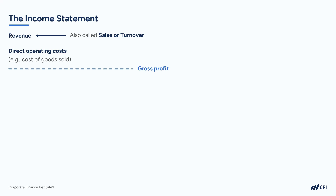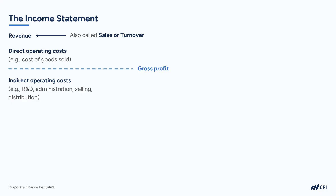Next on the income statement come the indirect operating costs. So this could be things like selling expenses, distribution expenses, administration expenses. Sometimes these are listed as individual line items, but sometimes they're grouped together in just one line item called selling, general, and admin expenses, or SG&A for short.